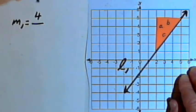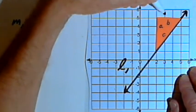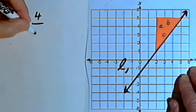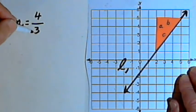And the run, the distance we go from left to right, is the same as the length of side B. That's 3 units. So the slope of this line is 4 over 3.